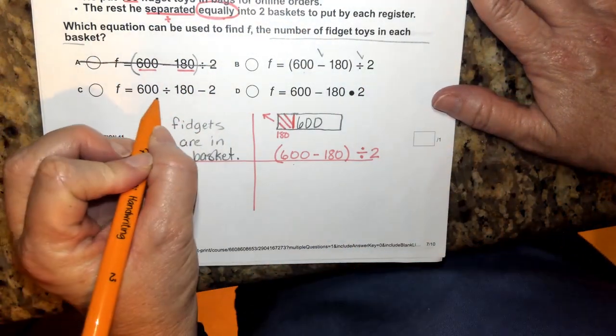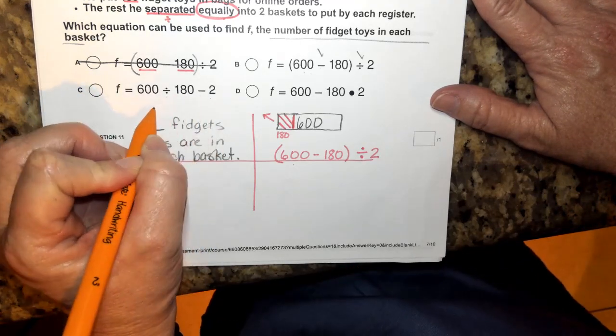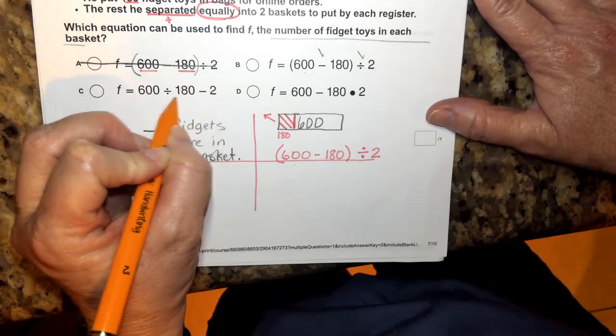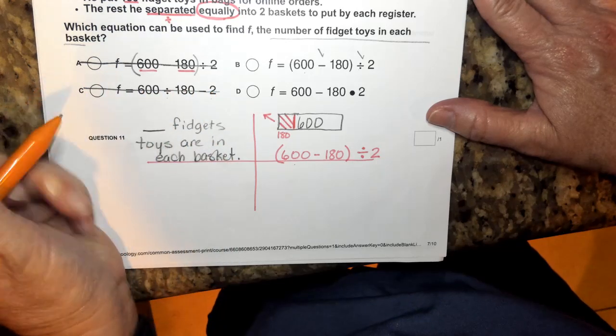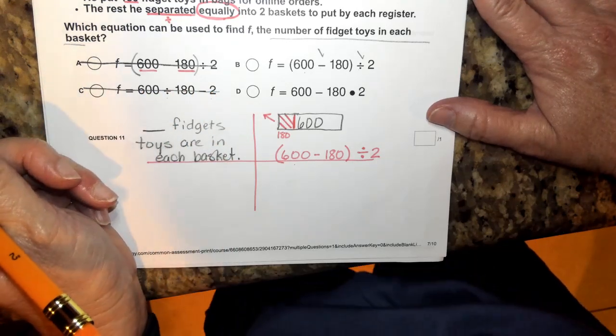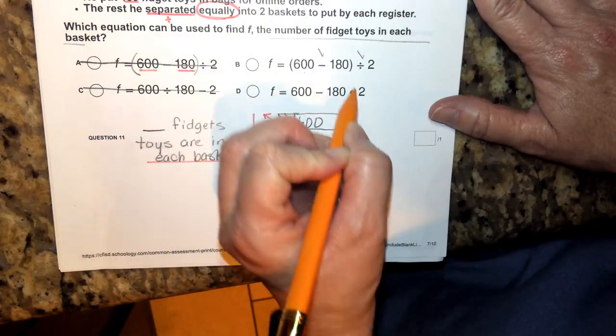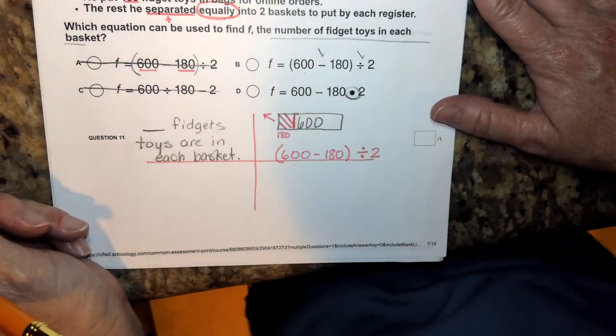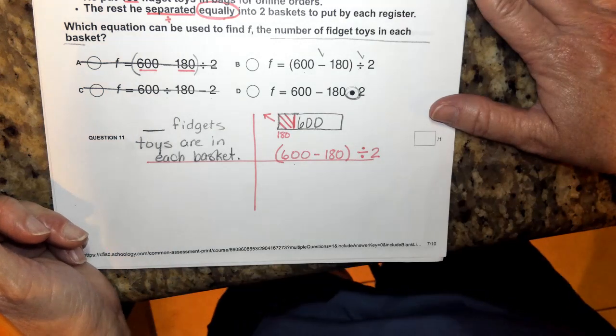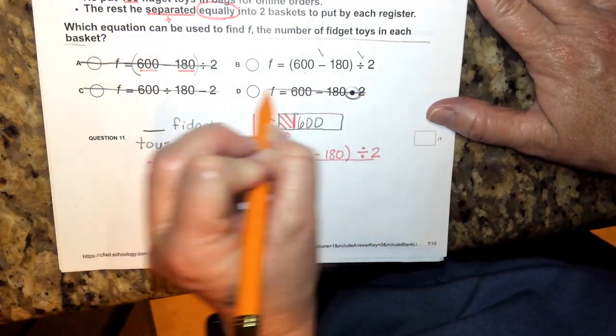When I look over here, I have the right actions but with the wrong numbers. So this is not what we're wanting. We do not want to take 600 and divide it by 180. And then finally, the first thing that stands out to me is we're not going to be multiplying that number by two. We're going to be dividing it.